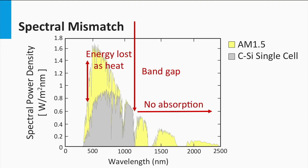Both loss processes — heating and non-absorption — depend on the band gap. The higher the band gap, the smaller the losses due to heat, but the larger the energy losses below the band gap. The smaller the band gap, the larger the losses due to heat, whereas the energy losses below the band gap decrease. This suggests that if we only consider the optical losses and ignore all other losses, we will have an optimum. The optical losses due to this mismatch between the band gap and the solar spectrum limit the maximum conversion efficiency to 48%.